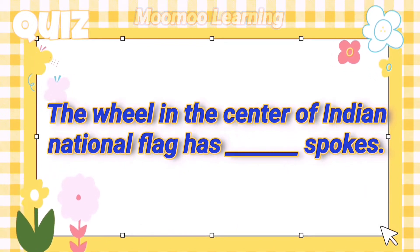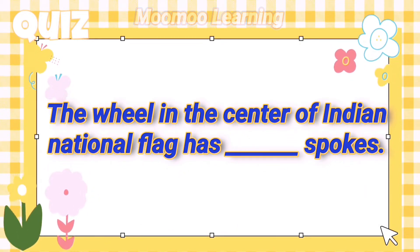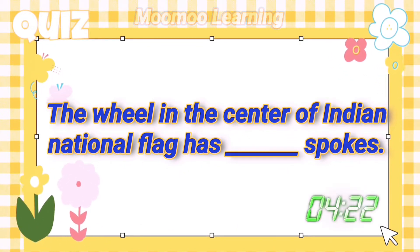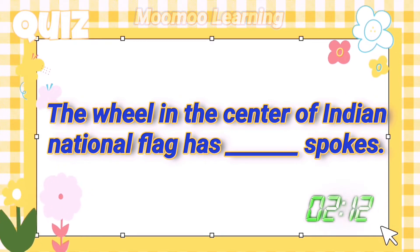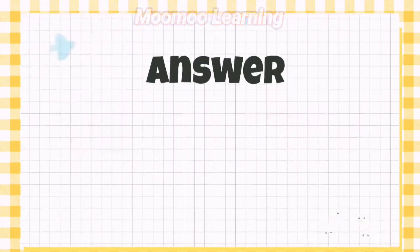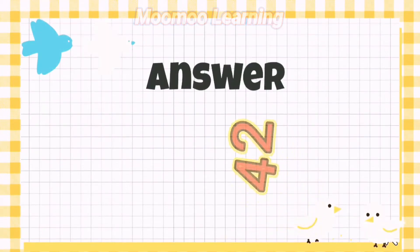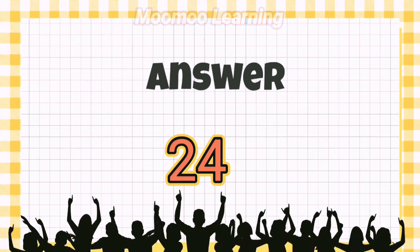The wheel in the center of the Indian national flag has how many spokes? Answer: 24 spokes.